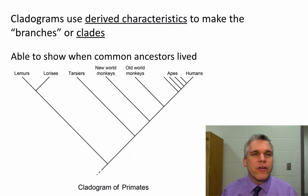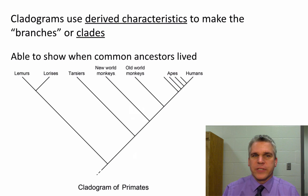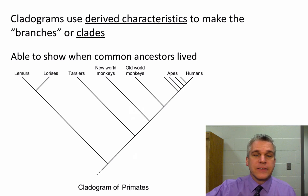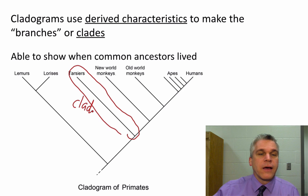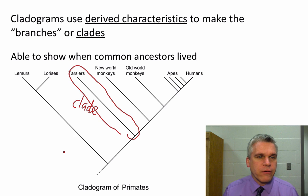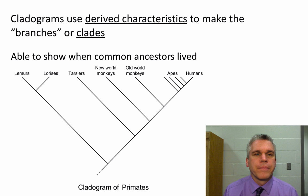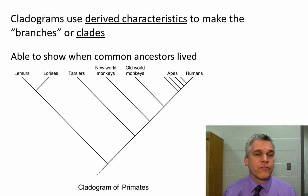How do these branches come about on cladograms? We use something called a derived characteristic to make these branches, or these clades. Each branch off of the trunk is called a clade, and that's how we get the word cladogram. But how do we come up with these different branches or clades?